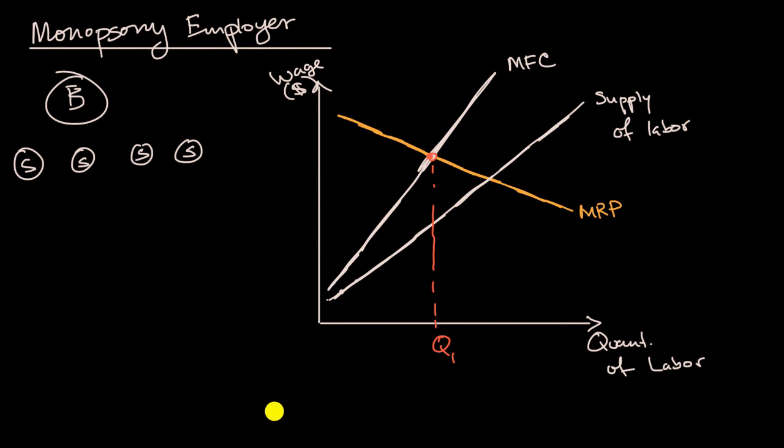And then what wage are they paying? Pause this video and think about that, because this is always a little bit tricky. Well, you might be tempted to draw a line here, but remember, this doesn't describe the actual wage. The wage of that quantity is described by the supply of labor. So this would be the wage that the firm would pay.